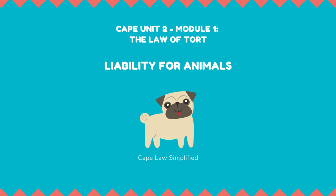Liability for dogs: the owner is liable at common law for damage done by his dog if he has had knowledge of its dangerous disposition — for example, if it is a naturally dangerous breed such as a pit bull or rottweiler, or if it has in the past shown a vicious disposition. Dogs are treated as a special type of animal mansuetae naturae.